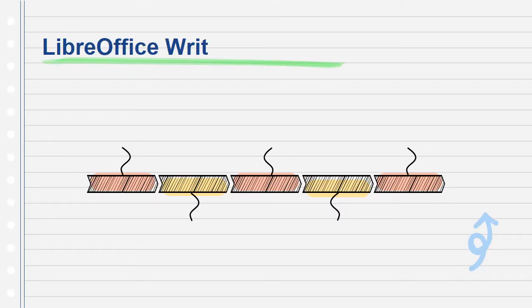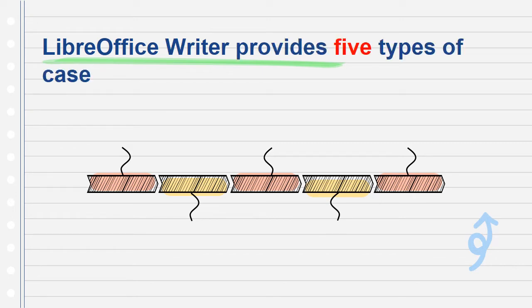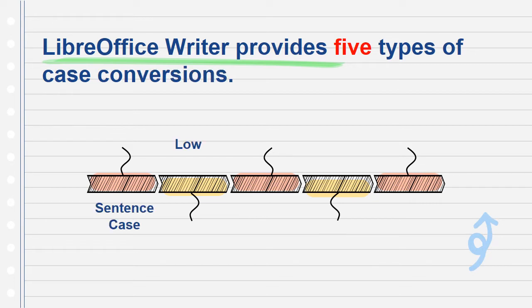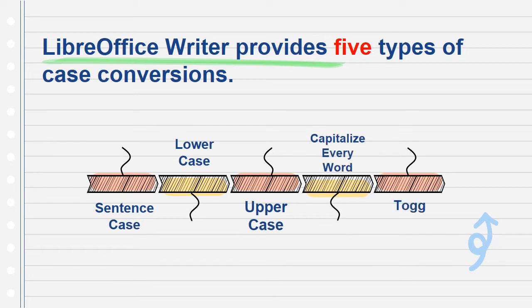LibreOffice Writer provides five types of case conversions: sentence case, lowercase, uppercase, capitalize every word, and togglecase.